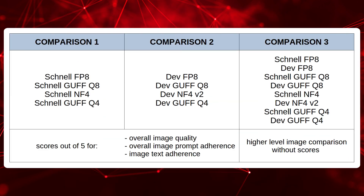We'll start off comparing the Schnell model images to one another, then the Dev model images to one another, then wrap up with a quick comparison of some Schnell and Dev images together. For the first two detailed comparisons I'll be awarding scores out of 5 for overall image quality, overall prompt adherence, and image text adherence. Bear in mind that my scores are subjective and based on my opinion. Also, due to limited sample size this is by no means a conclusive test, but it should certainly give you a good indicative comparison.